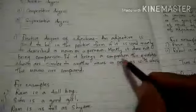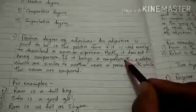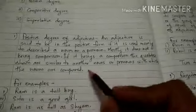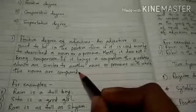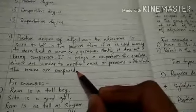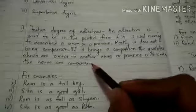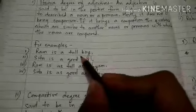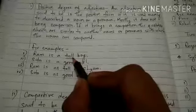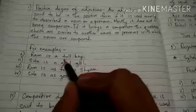We have to understand how positive degree brings comparison. If we use positive degree of adjectives to show comparison, the qualities shown are equal to those of another noun or pronoun with which the noun is compared — we show equal qualities. Like for example, 'Ram is a tall boy.' Here, tall is just used to describe the noun; we are not showing any comparison, so this is positive degree of adjective.